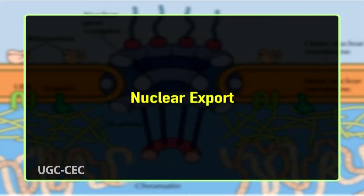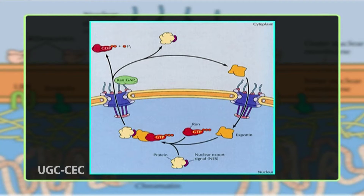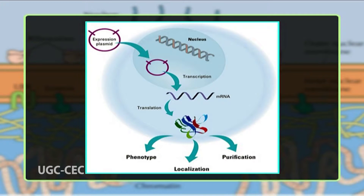Nuclear export roughly reverses the import process. In the nucleus, the exportin binds the cargo and RanGTP, then diffuses through the pore to the cytoplasm where the complex dissociates. RanGTP binds GAP and hydrolyzes GTP; the resulting RanGDP complex is restored to the nucleus where it exchanges its bound ligand for GTP. Whereas importins depend on RanGTP to dissociate from their cargo, exportins require RanGTP in order to bind their cargo. A specialized mRNA exporter protein moves mature mRNA to the cytoplasm after post-transcriptional modification is complete.